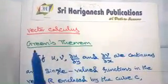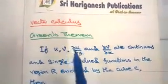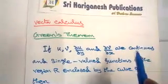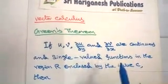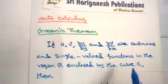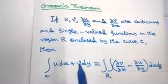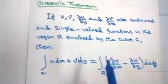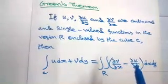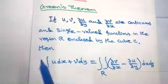Vector Calculus Green's Theorem. If u, v, ∂u/∂y and ∂v/∂x are continuous and single valued functions in the region R enclosed by the curve C, then the integral over C of u dx plus v dy equals the double integral over R of (∂v/∂x minus ∂u/∂y) dx dy. This is the statement of Green's Theorem.